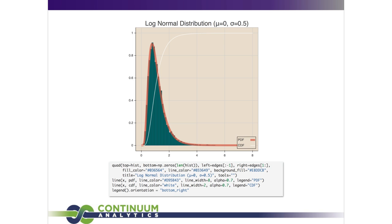One last example here: just some quads in case you want to do a histogram. This is a nice example of a histogram with an ideal distribution and a cumulative distribution shown as well. Again, it's a very simple high-level interface, and this is what we're going to be talking about today.